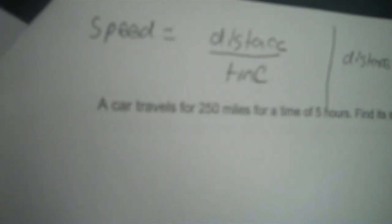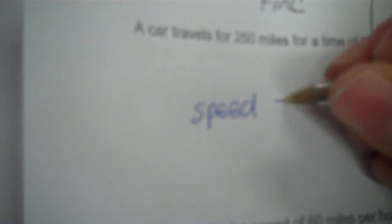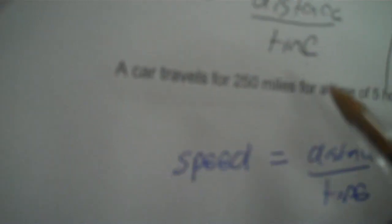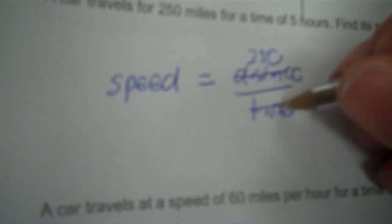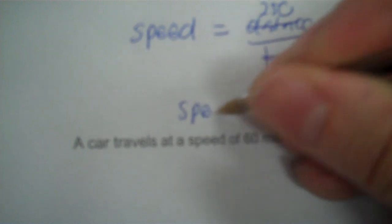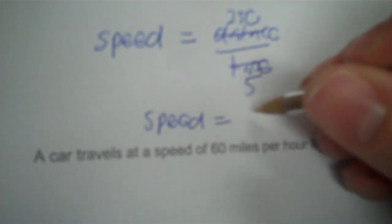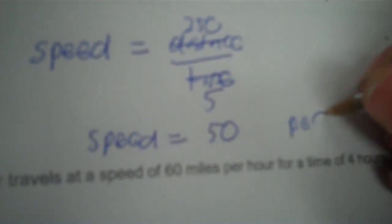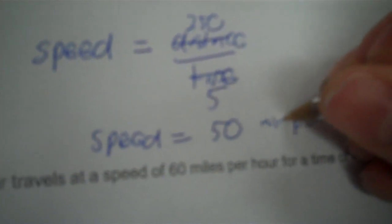A car travels 250 miles over a time of five hours — find its speed. Speed equals distance divided by time. The distance is 250 miles and the time is five hours. 250 divided by five is 50, and you label it miles per hour. When you find speed, it's per — miles per hour.